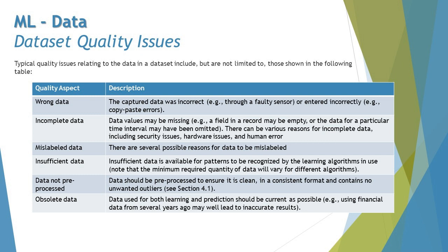Number one: wrong data — the captured data was incorrect or entered incorrectly, which means it could be through a faulty sensor, captured incorrectly, copy-paste errors, or typographical errors. There are a lot of things we may have to take into account to confirm that the data is really appropriate.